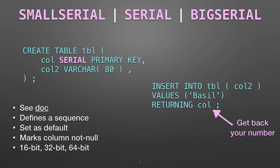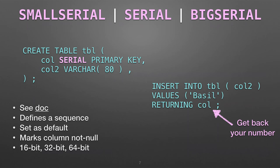Serial used to say small serial, serial, or big serial — 16-bit, 32-bit, and 64-bit — depending on how many records you think you're going to have. Usually 32-bit was common. In this example we're saying insert into the table on a column with the value Basil, returning the column. The idea is if you look at that code, we're not referring to the primary key column except by saying give it back — when you insert the record, you get back this number that was automatically generated and assigned. That's database 101.